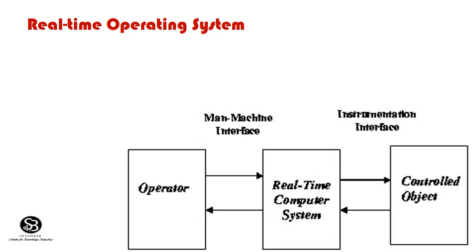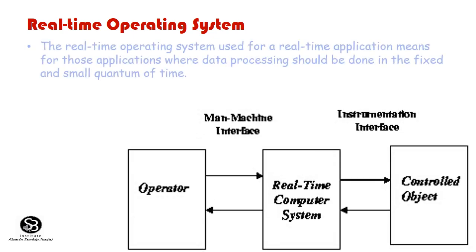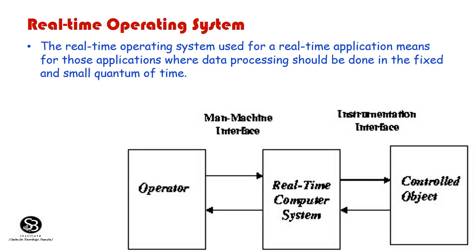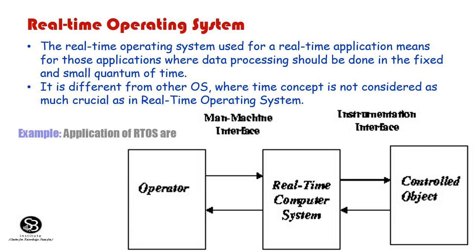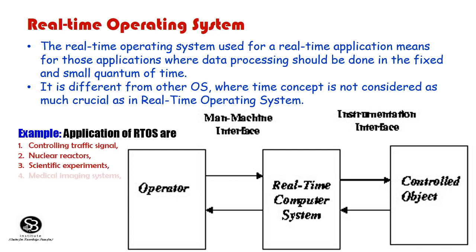Real-Time Operating System: The real-time OS is used for applications where data processing must be done in a fixed and small quantum of time. It differs from other OS types where the time concept is not considered as crucial. Real-time OS are used in traffic lights, nuclear reactors, scientific experiments, medical emergency systems, industrial systems, and home appliances.